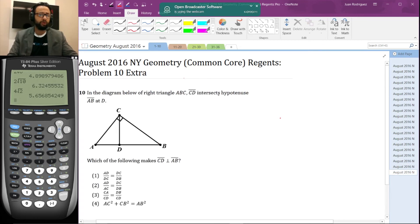So in the diagram below, right triangle ABC, CD intersects the hypotenuse AB at D, and then which of the following makes CD perpendicular to AB. Okay. So we should know the proportion. There's a few answers here and hopefully the answer that we know to be true is there. But pause the video, try it on your own, see if you can get it.